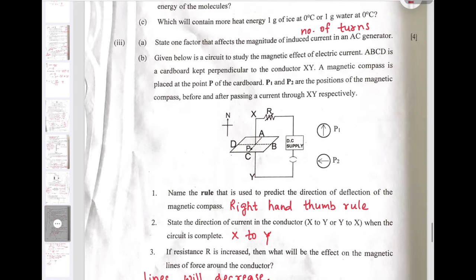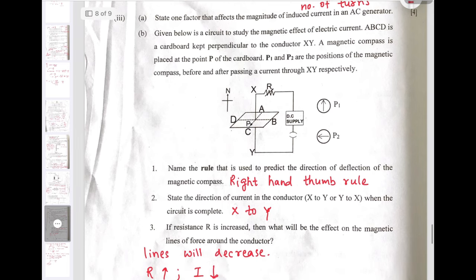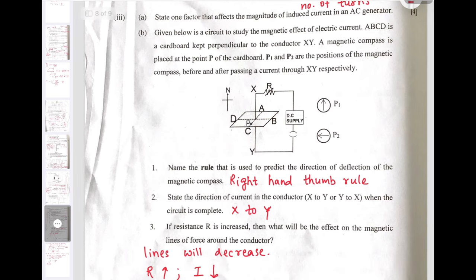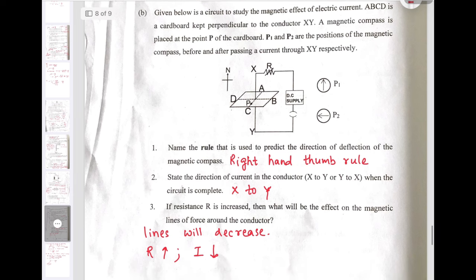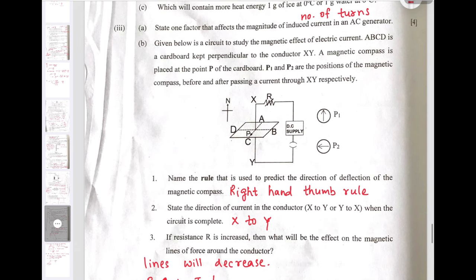Next: State one factor that affects the magnitude of the induced current in AC generator. Answer is number of turns. D, the diagram is given and we are asked to state the rule that is used to predict the direction of deflection of magnetic compass. The answer is right hand thumb rule.